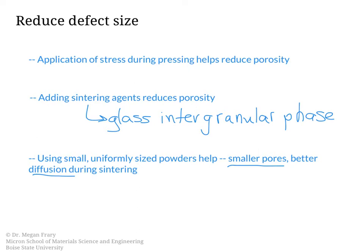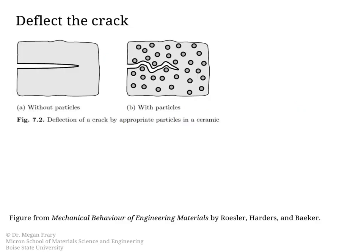The other toughening mechanisms we will talk about act once there is actually a crack present, and are ways to slow down the growth of that crack. The first method to slow down the crack is crack deflection. On the left we have a picture of a crack propagating straight through a material that has no particles, and on the right side we have a crack in a microstructure that has a lot of particles, and the crack is having to bend to move around those particles since it cannot go through them.